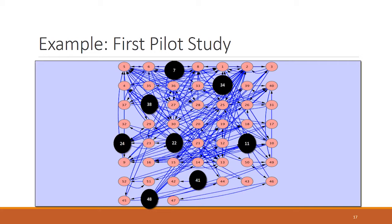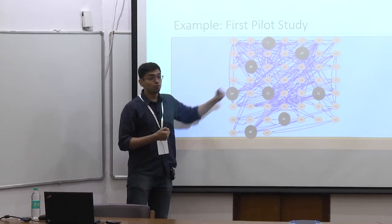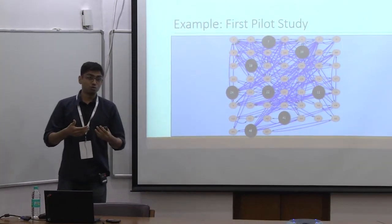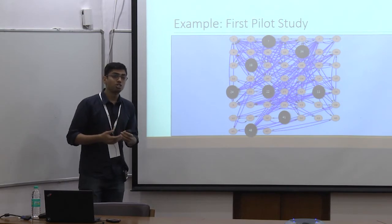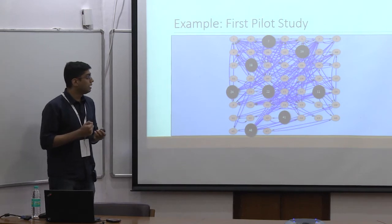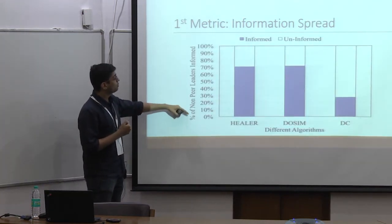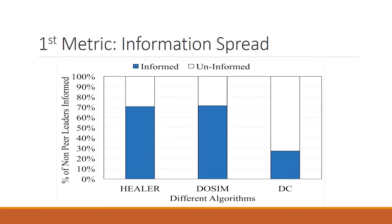In this picture, there are two kinds of nodes: the black nodes are the peer leaders whom we directly give information to, and the remaining non-peer leader nodes whom we hope information would reach. We measure what percentage of non-peer leaders received information about HIV, as that is the true metric of algorithm performance. The y-axis shows what percentage of non-peer leaders were informed about HIV by the end of the interventions. As you can see, Healer and Dosim were able to spread information to 70% of non-peer leaders, whereas degree centrality only reached 27%.